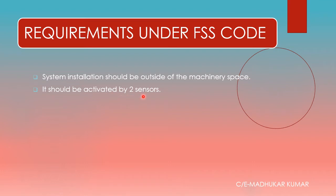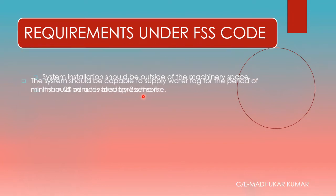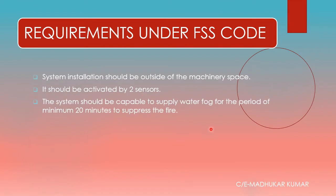The system should be activated by two sensors — a flame sensor and a smoke sensor. Both sensors must be activated together to trigger the hypermist system in that particular zone. The system should be capable of supplying water fog for a minimum period of 20 minutes to suppress the fire.